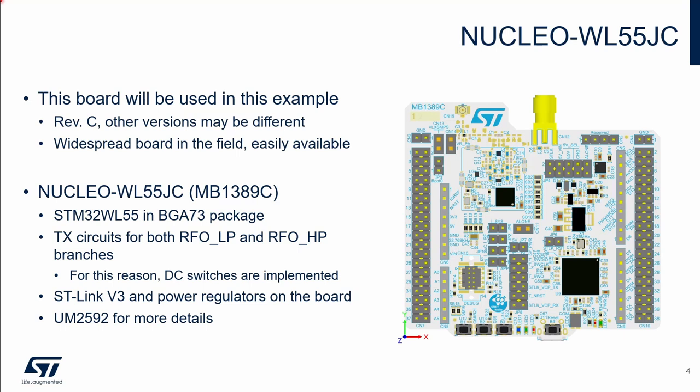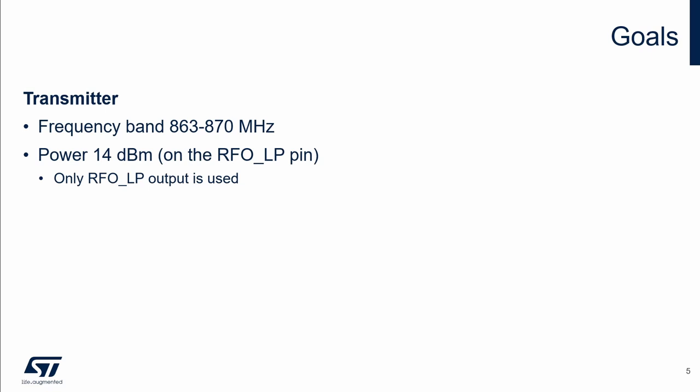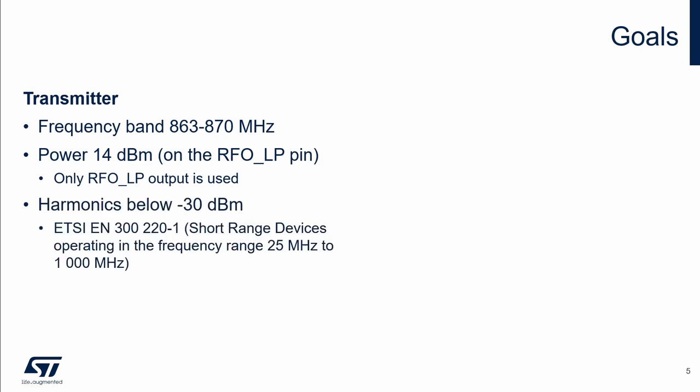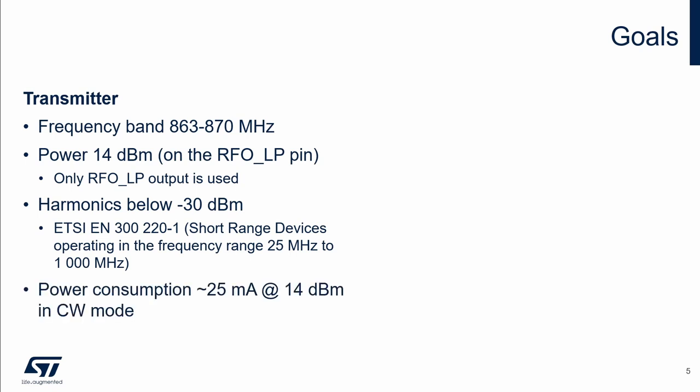More details about this board can be found in the user manual. Our goals for the transmitter are: a frequency band from 863 to 870 MHz, maximum power of 14 dBm at the low power pin — only this low power output is used. The high power output is unused. All harmonics and spurious components of the output signal must be below −30 dBm to fulfill European regulatory limits. The requested power consumption is about 25 mA, which is a typical value for 14 dBm output power in unmodulated carrier mode.